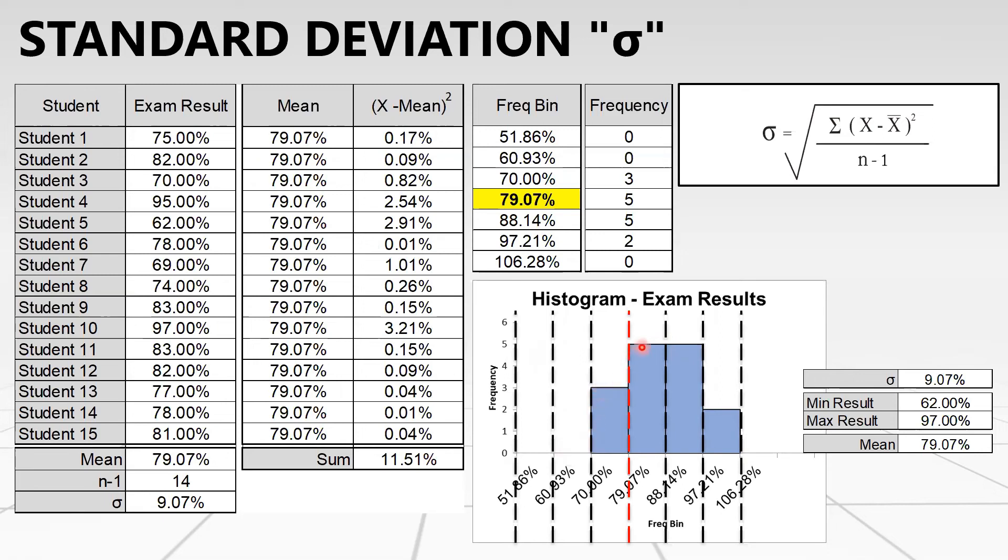My mean value is 79% with a standard deviation of 9.07%. I have a minimum result of 62% and a maximum result of 97%. Remember that we need to make a final statement about this exercise. As a final statement, we can conclude that there is a high range in the students' skills from 62% to 97% with a standard deviation of 9.07%, while the average score or mean score of the students is 79%.